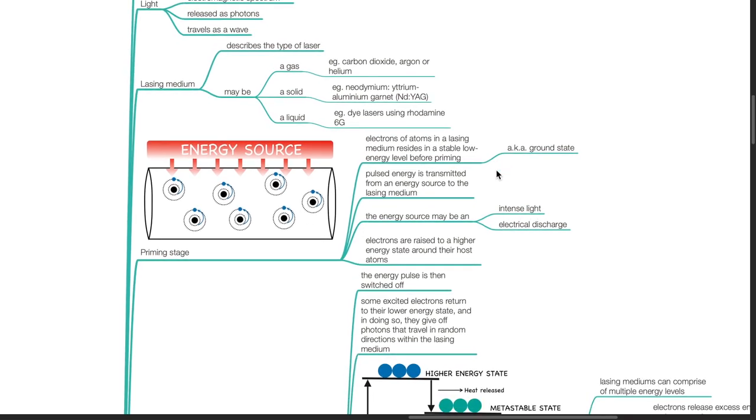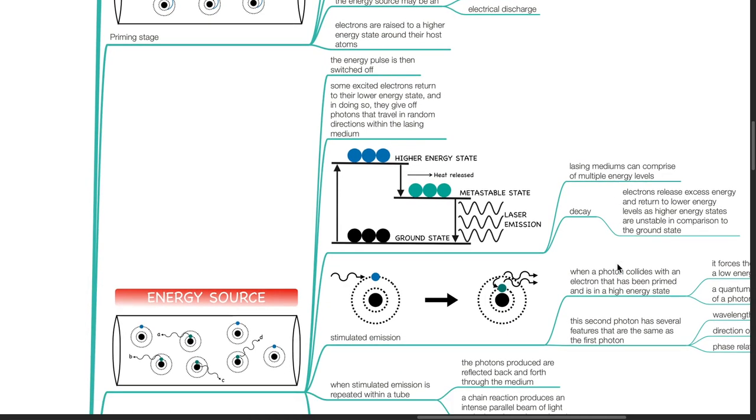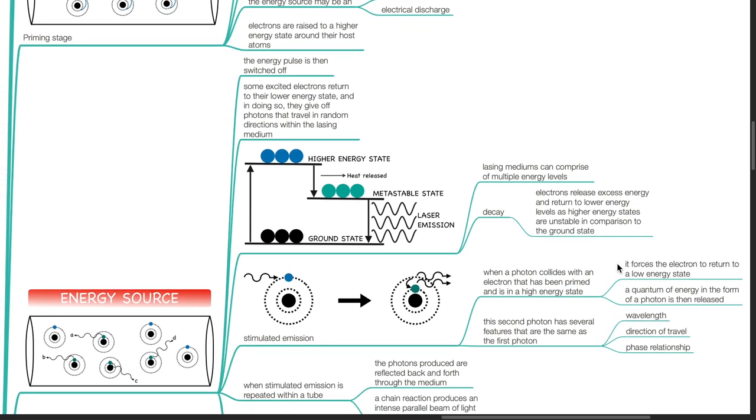The priming stage. Electrons of atoms in a lasing medium resides in a stable and low energy level before priming, also known as the ground state. Pulsed energy is transmitted from an energy source to the lasing medium. The energy source may be an intense light or electrical discharge. Electrons are raised to a higher energy state around their host atoms. The energy pulse is then switched off.